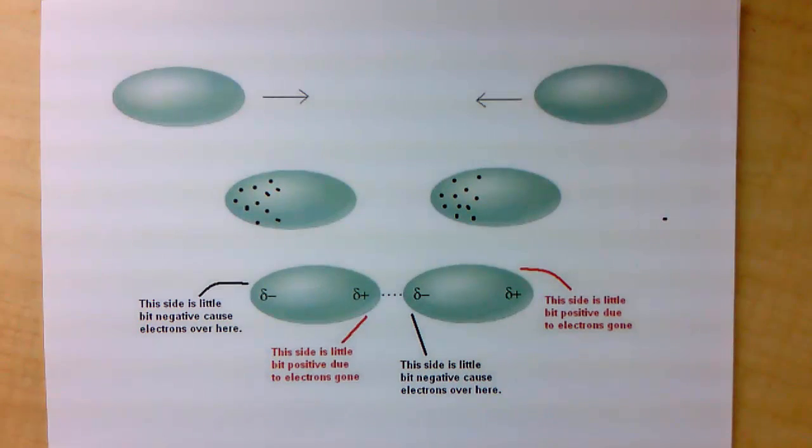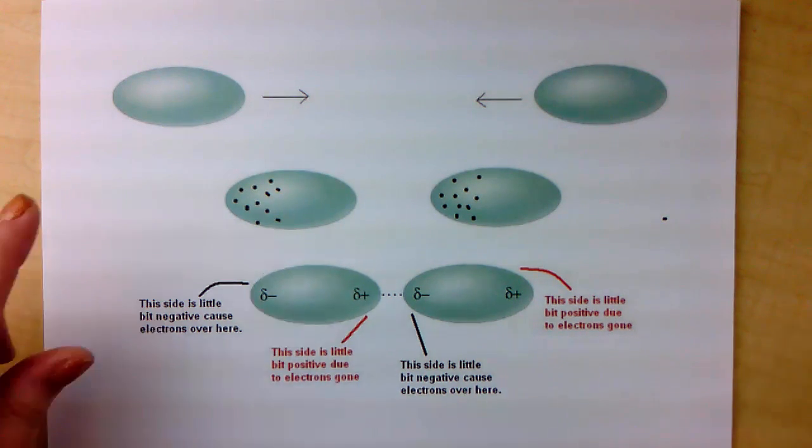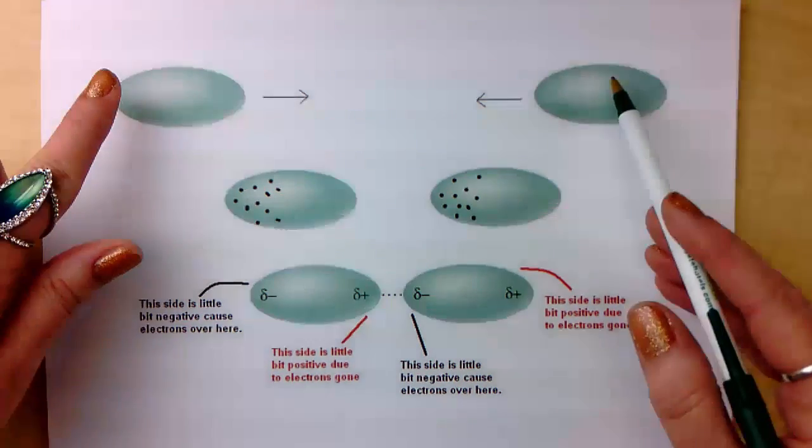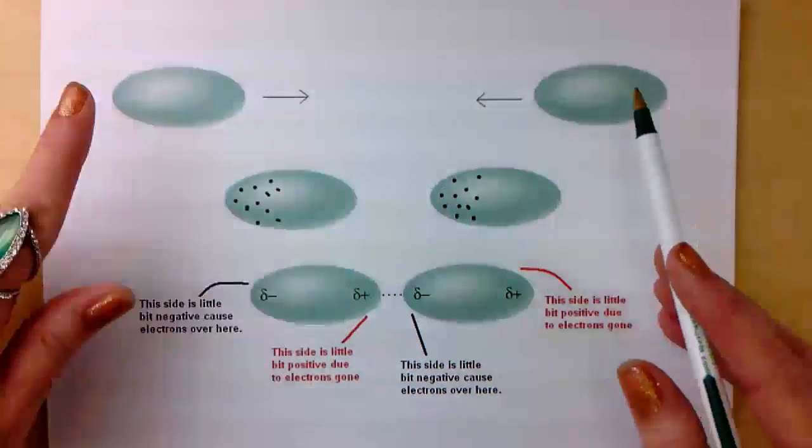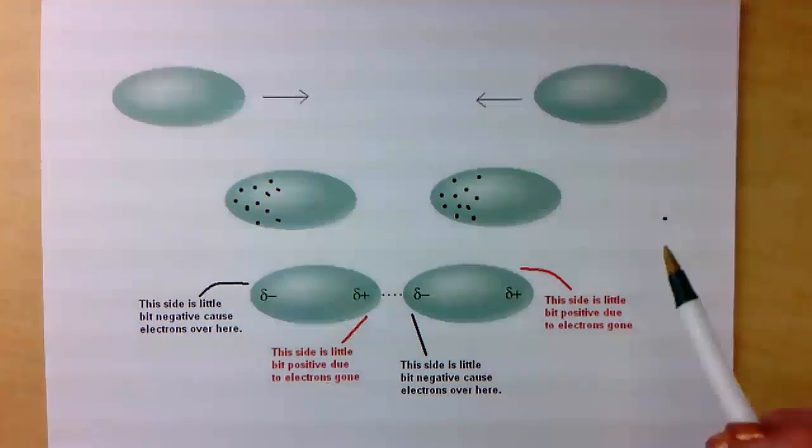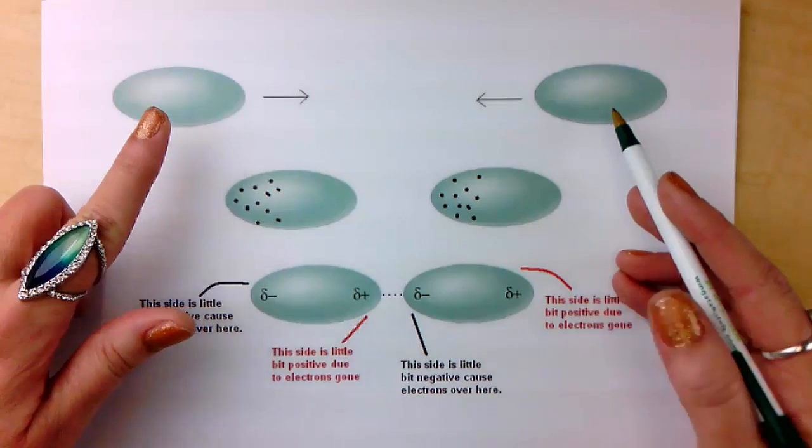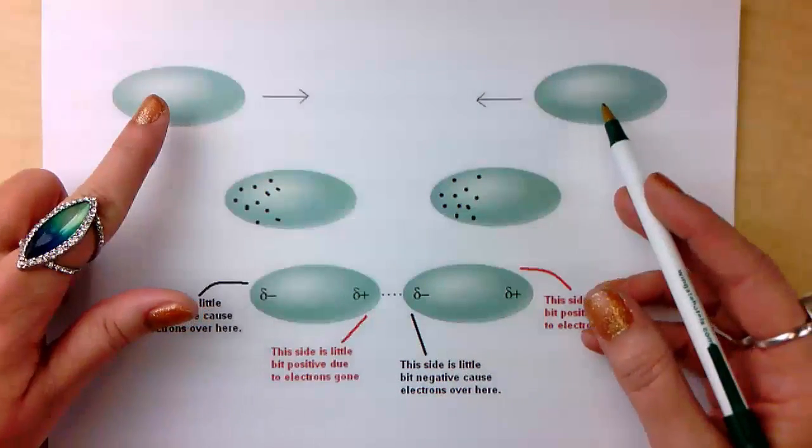Now remember, nonpolar means we have CH bonds or we're bonded to ourselves, such as O to O, N to N, P to P, F to F. When you're bonded to yourself, that's a nonpolar bond. And when you have CH bonds, you're nonpolar as well. So these are molecules that overall are nonpolar. Even if they have polar bonds, they're canceling out overall, so the molecule is nonpolar overall.